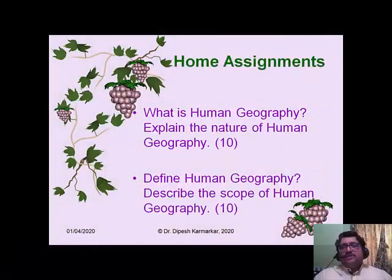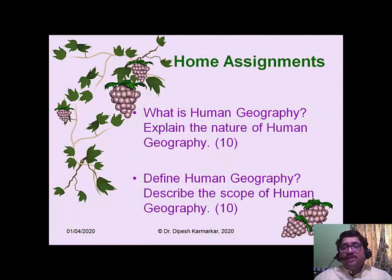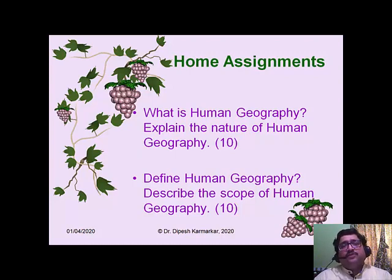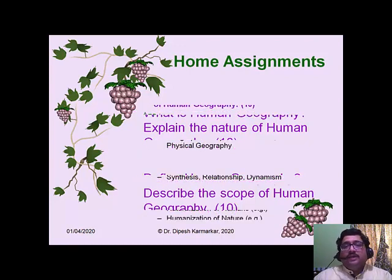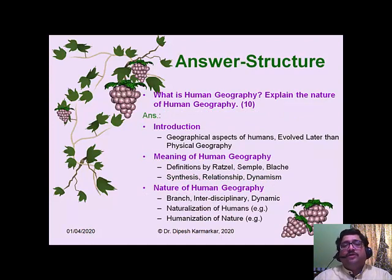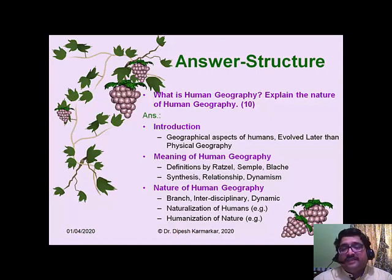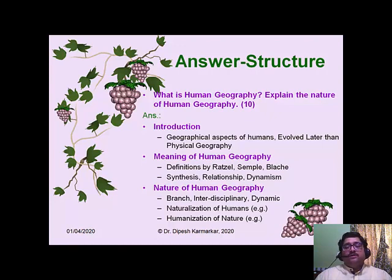Now there are two assignments expected of you. The first question is: what is human geography — explain the nature of human geography? The second is: define human geography and describe the scope of human geography. Both questions can come for 10 marks each. For the first question, divide your answer into three sections: introduction, meaning of human geography with definitions and their key qualities, and third, the nature of human geography covering naturalization of humans and humanization of nature with examples.